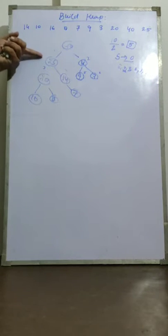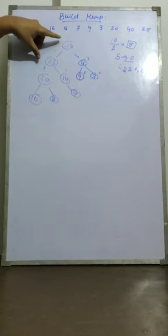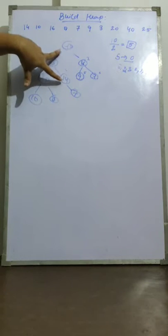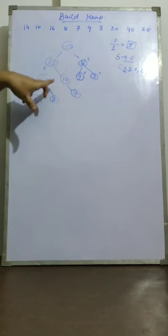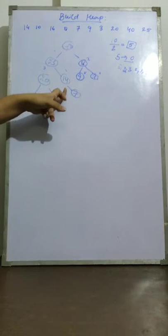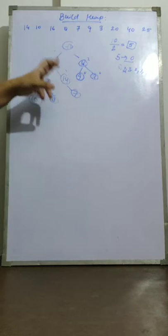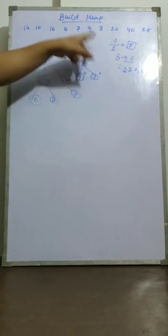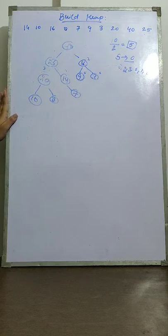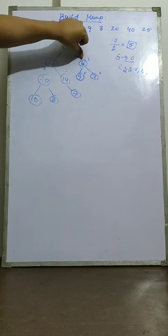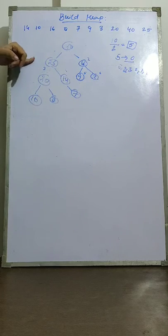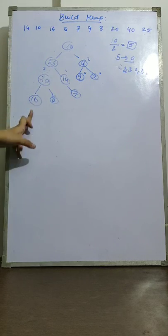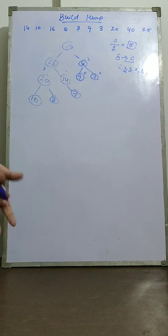Whenever I swap something, I need to traverse its complete subtrees. After swapping 14 at index 0, I traversed down and swapped 25 and 14, then further swapped 20 and 10. The final max heap has 40 at the root, then 25 and 16; 25 is greater than 20 and 14; 20 is greater than 10 and 8; and 40 is greater than 7.